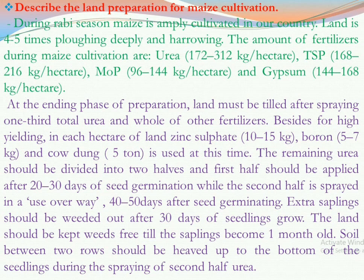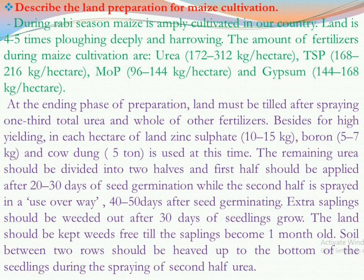Extra saplings should be weeded out after 30 days of seedling growth. Any unwanted plants or weeds must be removed, as weeds cause harm to maize cultivation. The land should be kept weed-free until the saplings become one month old. The soil between two rows should be heaped up to the base of the seedling during the application of the second half of urea. That is all about land preparation for maize cultivation.